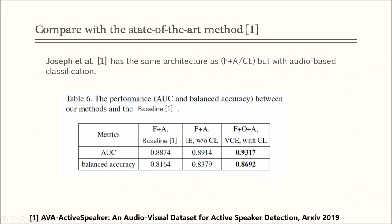We also compare our best baseline with the state-of-the-art method, which has the same architecture as our model, face and audio as inputs, contrastive loss as loss function, but it's trained with an additional cross-entropy loss for the audio embedding network. As the table shows, our proposed model with face, audio, and optical flow as inputs with visual-coupled embedding and contrastive loss achieves consistent improvements over the state-of-the-art method.